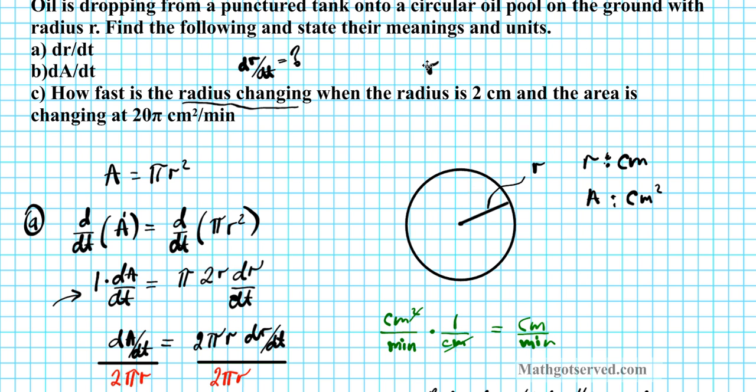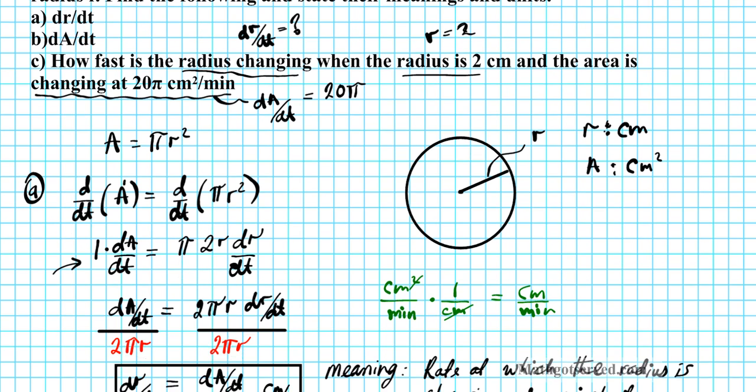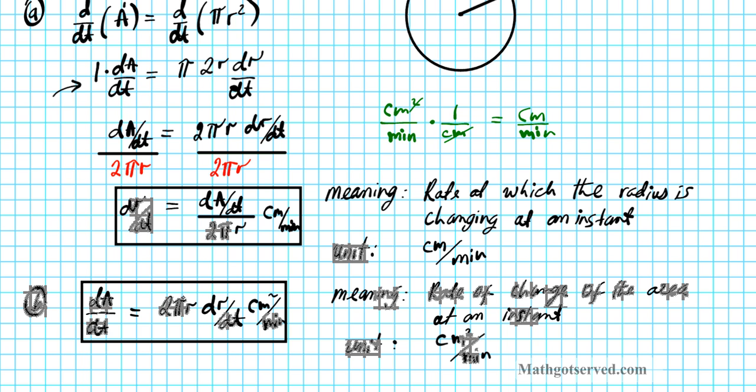Radius is 2, r equals 2. And then area is changing at 20 pi centimeters squared per minute. This is the instantaneous rate of change of the area. This right here is dA/dt, and we know that it is 20 pi. So with these pieces of information we can set up an algebraic equation using any of the two equations and then we can find dr/dt.